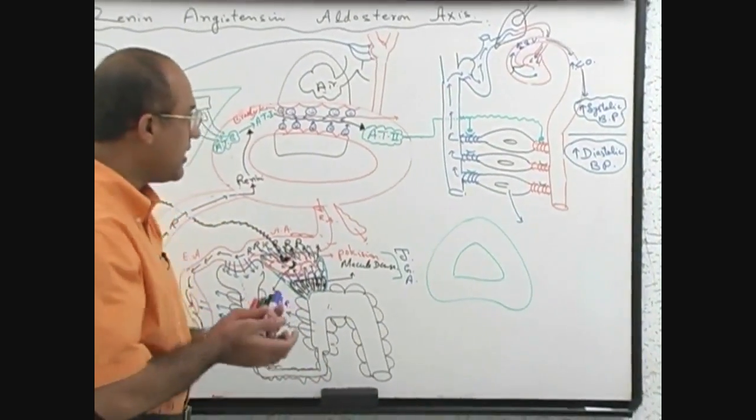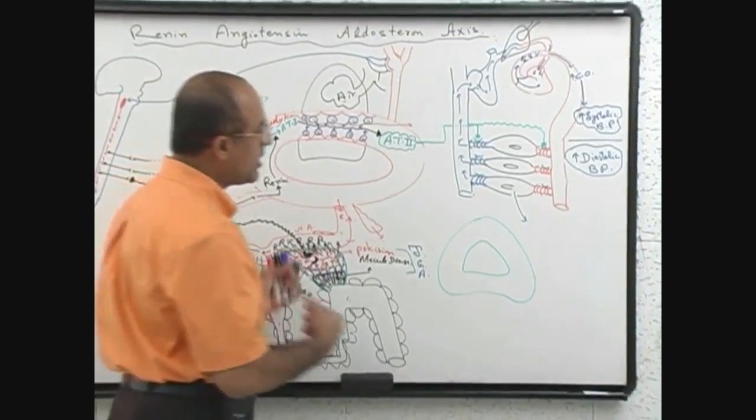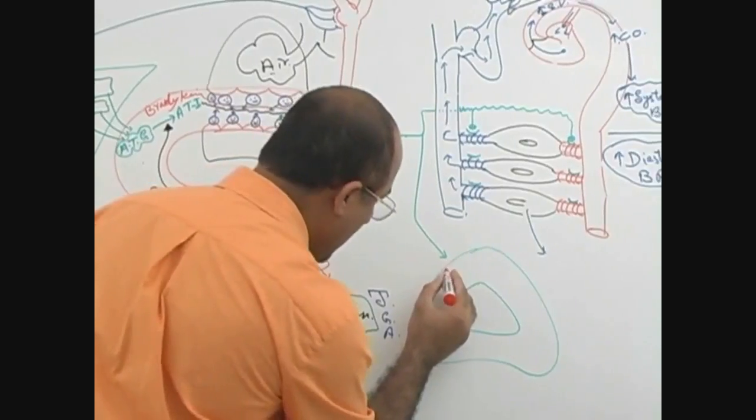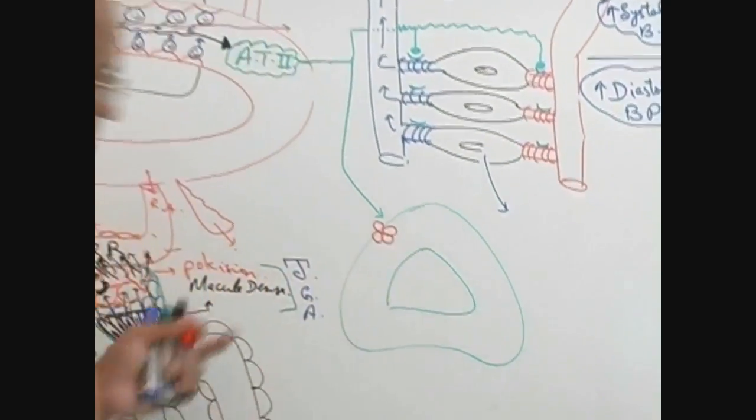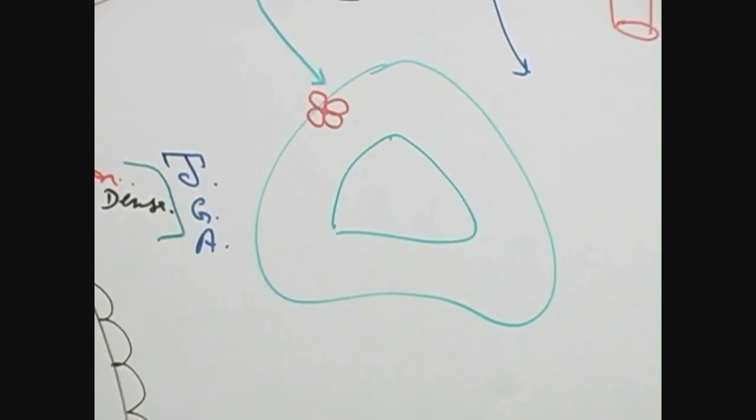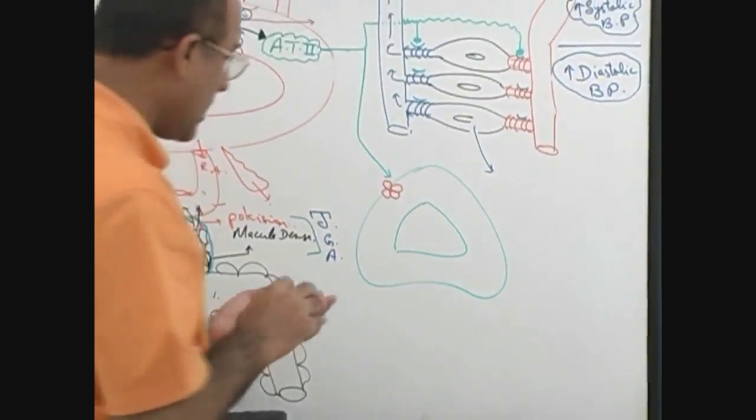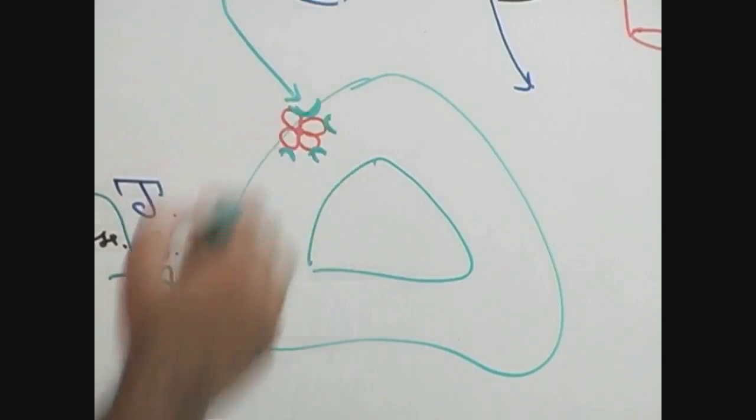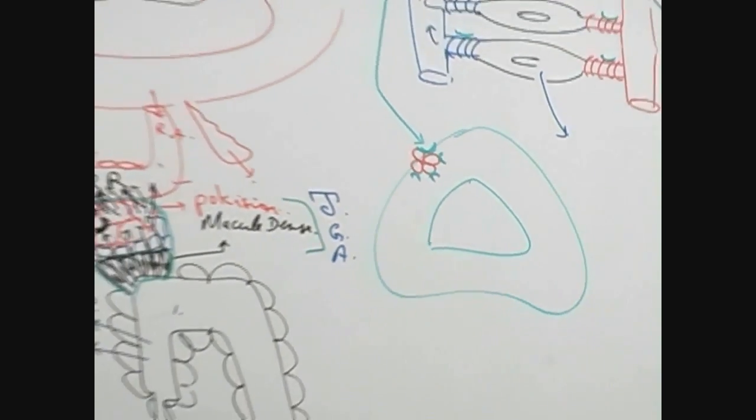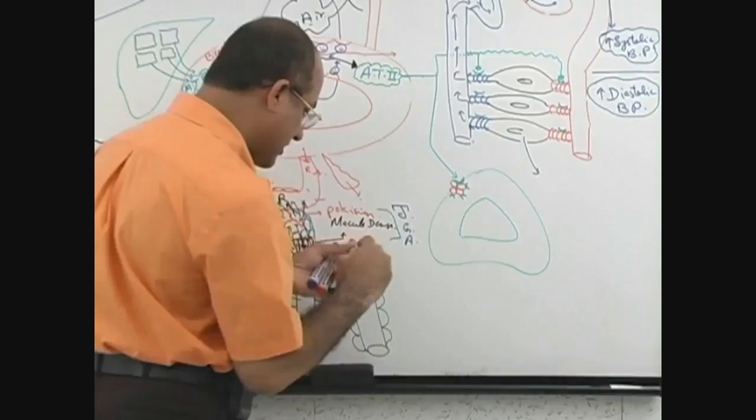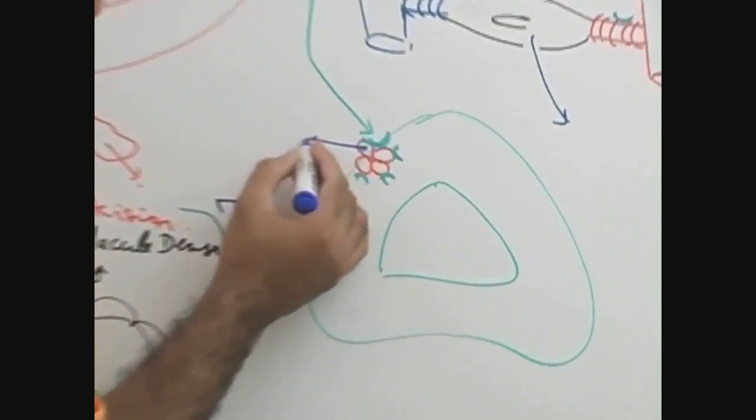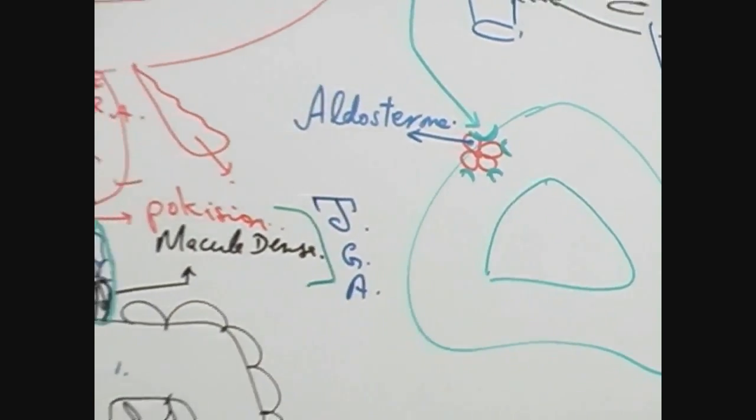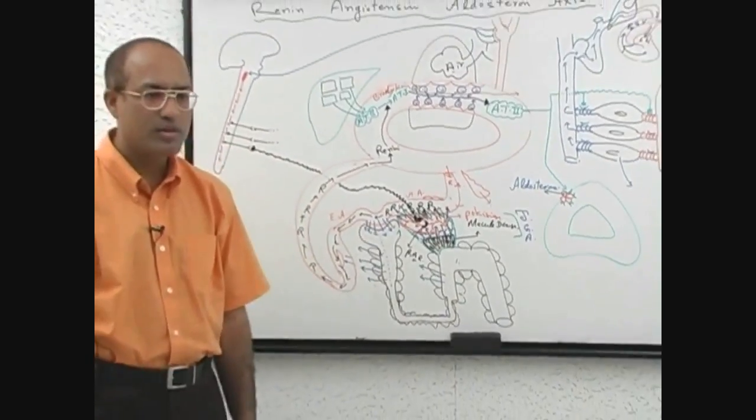Meanwhile, angiotensin 2 will also go to cells in the outer adrenal cortex. These are the cells in zona glomerulosa. These cells have receptors for angiotensin 2. When angiotensin 2 works here, these cells start releasing a substance called aldosterone. Angiotensin 2 will act on zona glomerulosa and lead to the release of aldosterone.